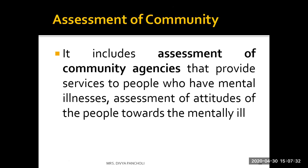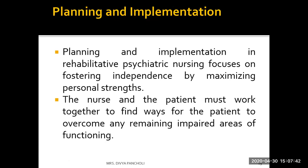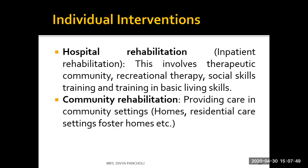Family assessment also includes social support available to the family, past family experiences with mental health services, and the family's understanding of the patient's problems and plan of care. Community assessment includes assessment of community agencies, what services they are providing. In planning and implementation, individual interventions can be hospital-based (inpatient or outpatient) including therapeutic community, recreational therapy, and social skill training.